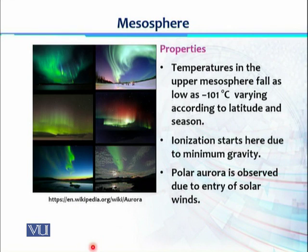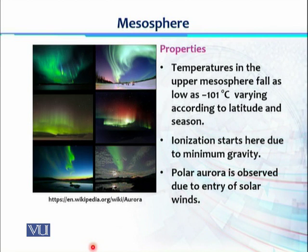The mesosphere is also a part of the ionosphere region. We know that atoms and molecules exist in the form of bonds, but if the bond is very weak, the molecules are broken and they form ions — this process is called ionization. In this region, the gravitational pull is weak, bonds are weak, and ionization of gases can be observed.